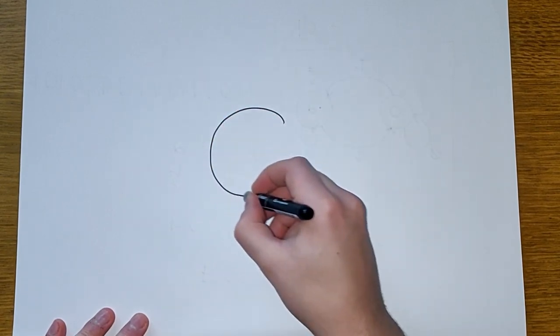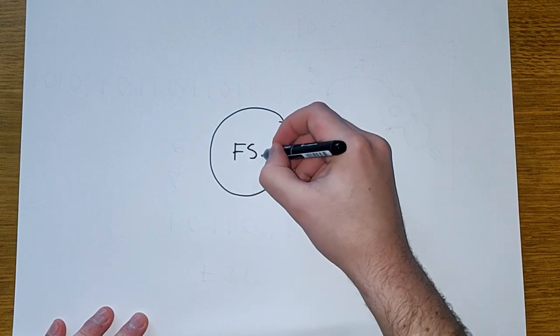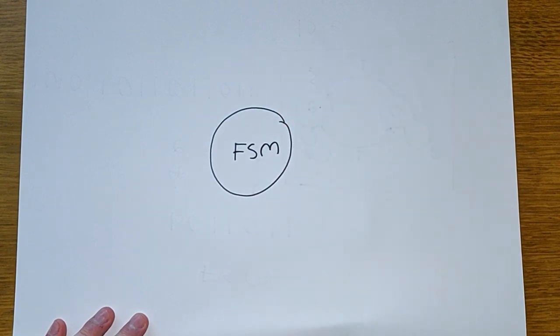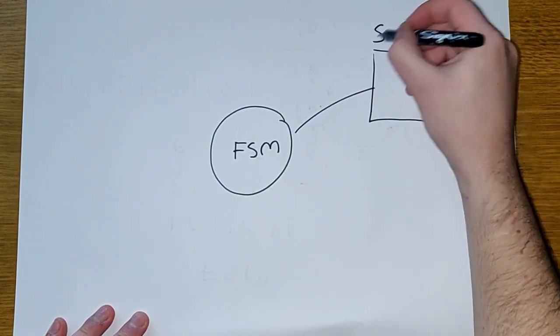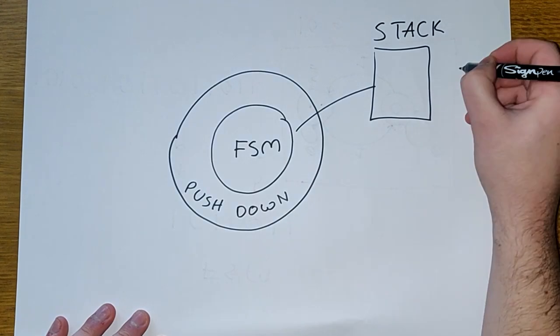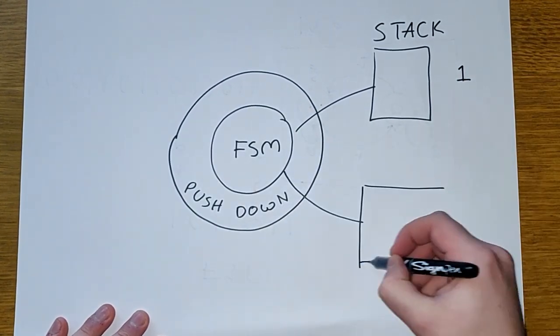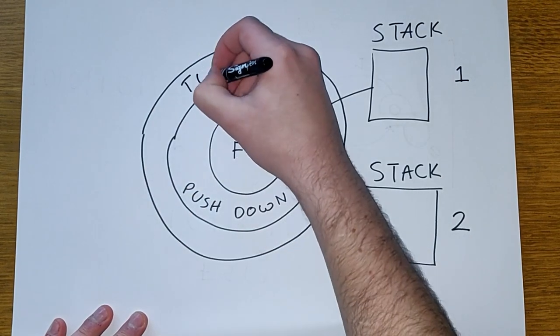At the lowest level, we have the finite state machine. Remember, that's the one with the circles and lines from the last video. Its primary limitation is that it can only process fundamental algorithms. Giving it a stack creates a push-down machine, meaning we can execute more complex logic. And adding a second stack makes a Turing machine, which means we can run even more complex programs.